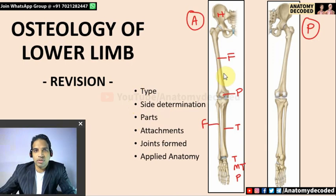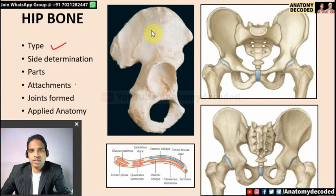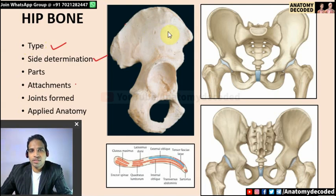We'll cover each bone under standard headings. Let's start with the hip bone. The first heading is the type of bone. Here we can see the irregular shape of the hip bone — that's why it is an example of an irregular bone.